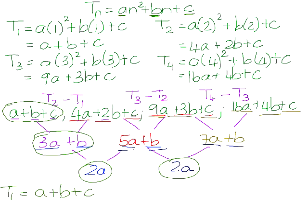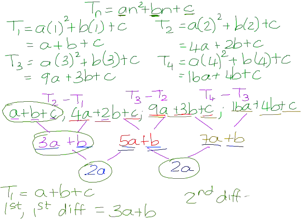We can use these three key relationships: term 1 is equal to a plus b plus c; our first first difference — the difference between term 2 and term 1 — is equal to 3a plus b; and our constant second difference is equal to 2a. We're going to use those to help us find the general term of a quadratic sequence.